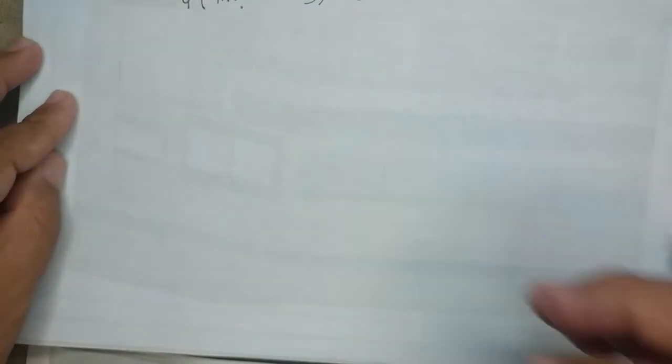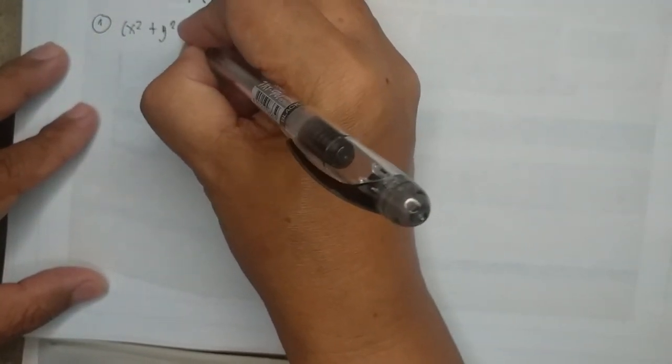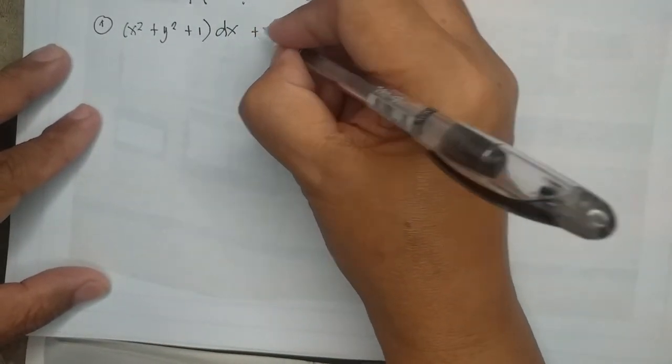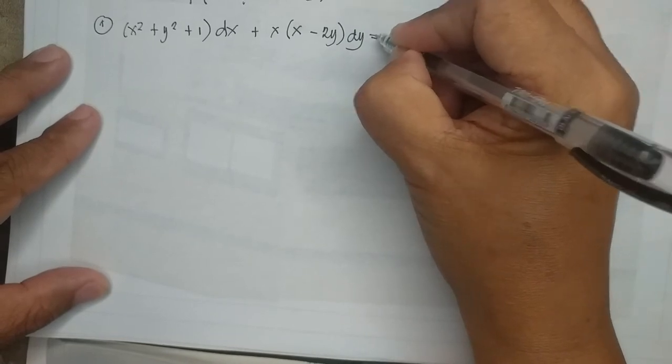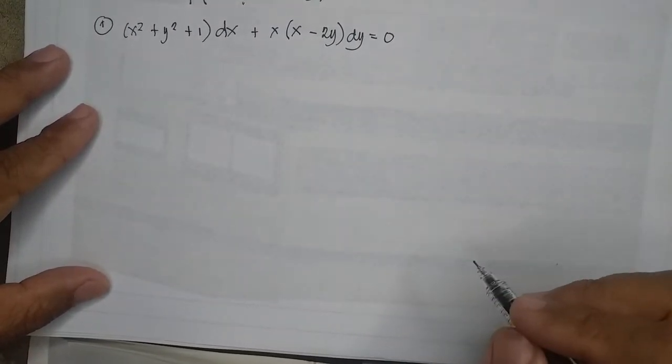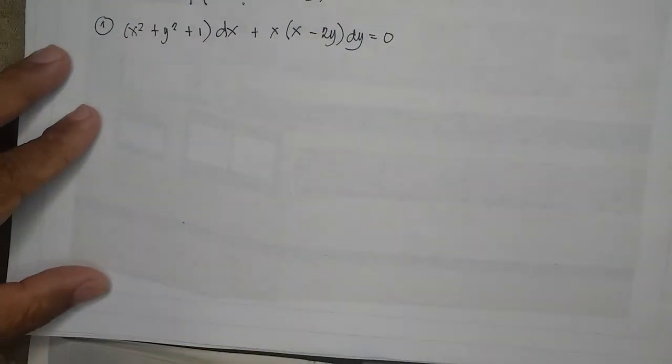Let us have an example to show what I meant by determining the integrating factor and multiplying it with the original equation. Problem number one: find the complete solution of x² + y² + 1 dx plus x(x − 2y) dy = 0. We have to get the derivative of M in terms of y and the derivative of N in terms of x to find out whether this falls under case number one.